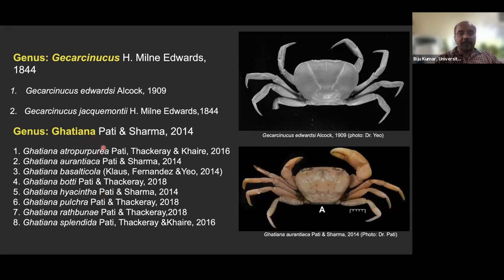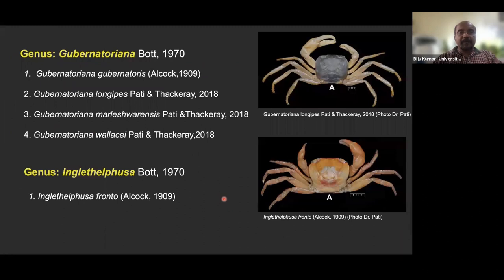Gatiana is a genus erected in 2019, with most records from the northern part of the Western Ghats by Pati and Sharma. From 2014 till now, 8 species have been described under this genus — all very beautiful and biogeographically important. Gubernatoriana has four species, also primarily in the northern part, and Inglethelphusa is another single-species genus.